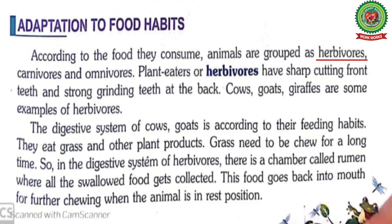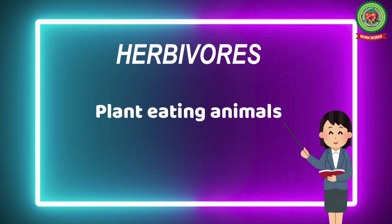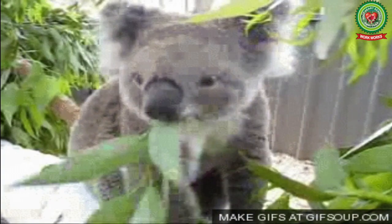Let's start our reading from the topic adaptation to food habits. According to the food they consume, the animals are grouped as herbivores, carnivores and omnivores. Underline the word herbivores. The definition of herbivores is plant-eating animals, as they eat plants, so they are also known as plant eaters.